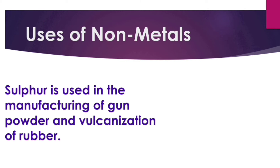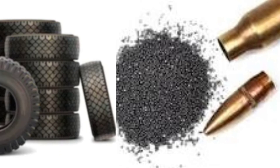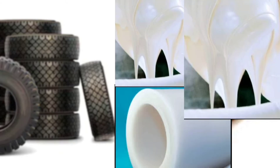Sulphur is one of the non-metals. Sulphur is used in the manufacturing of gunpowder and the vulcanization of rubber. Gunpowder is an explosive powder used in guns; it consists of a mixture of sulphur, charcoal, and potassium nitrate. Vulcanization of rubber is a process for hardening rubber.